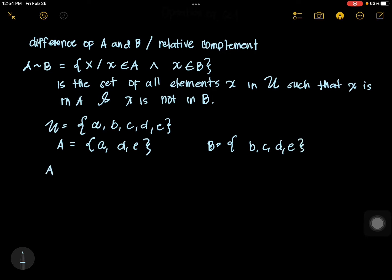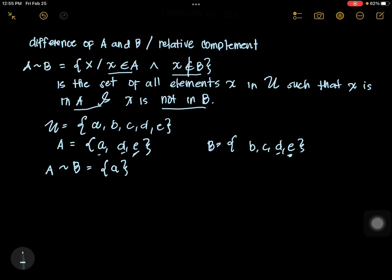Now, what is A minus B, the difference of A and B? It means it should be an element of A but not an element of B. So, we are going to cancel all elements in A that are also in B. We cancel E and D. What is left is A. So, that is the difference of A and B — we include those elements in A but not in B.